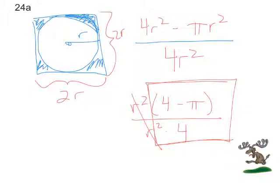Which is kind of interesting, because that value will always be a constant value. Regardless of the radius of the circle, we're going to always arrive at that same value for the ratio of the shaded area to the full square.